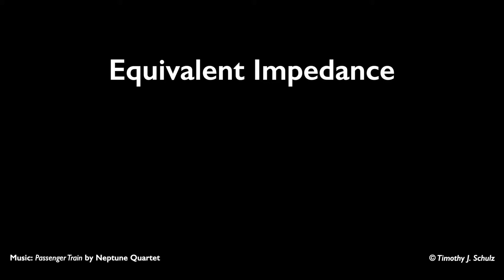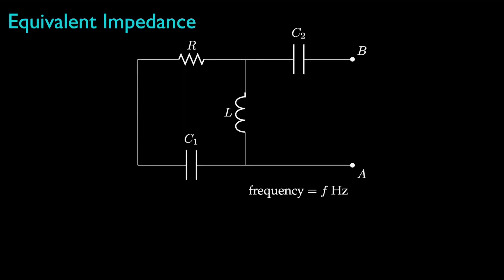In this lesson, we examine the concept of equivalent impedance for steady-state AC circuits with resistors, inductors, and capacitors. Let's begin our discussion of equivalent impedance by considering a circuit segment with one resistor, one inductor, and two capacitors arranged like this.